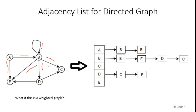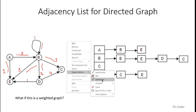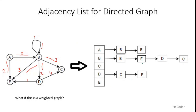An important question arises: what about a weighted graph? So far we have only stored the adjacency relationship, not the weights. If this is a weighted graph, how will we represent it in adjacency list form? Let's assign weights to the edges. For node A, B and E are adjacent — earlier we only stored their names.